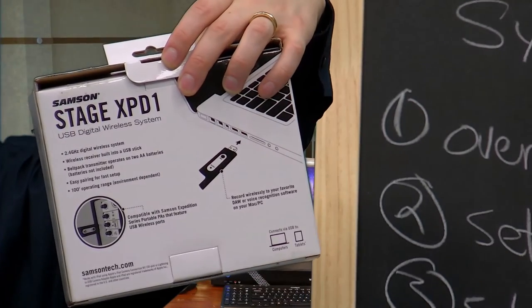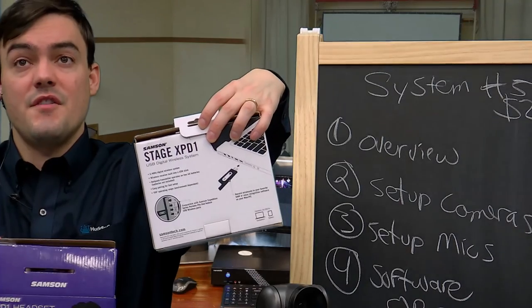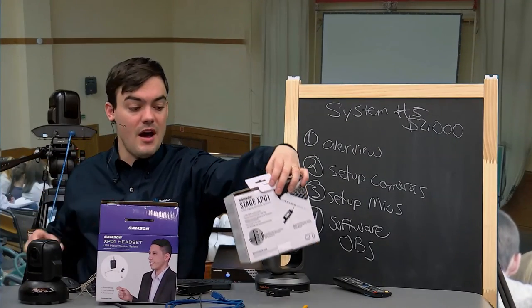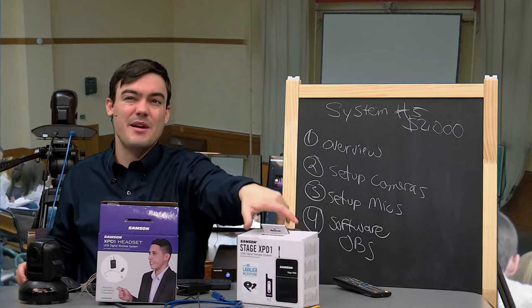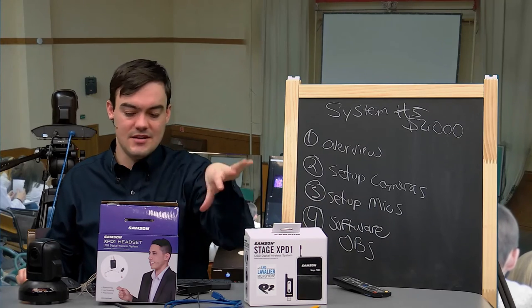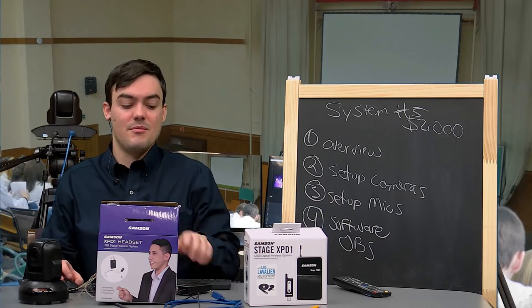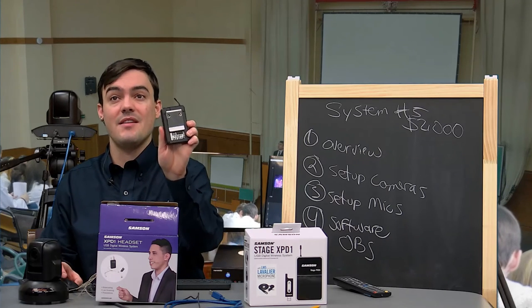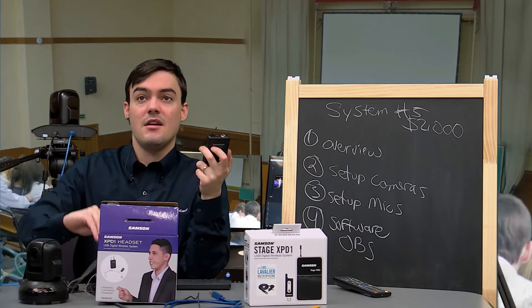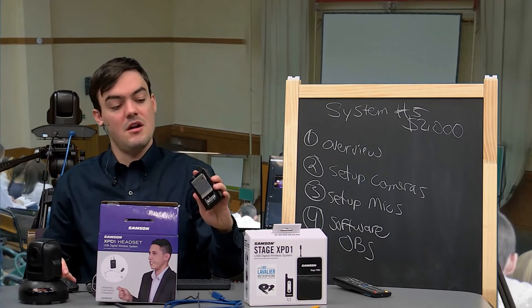It's a USB 2.0 plug that goes right into your computer. This goes up to 100 feet away from your space. So if you want to go about 100 feet away I would recommend 50, usually do half of what the manufacturer is claiming, indoors only. This does not work outdoors, I've tried it. And we plug it in USB 2.0 to the computer. It has a little belt pack. These are $99 from Samson. You can get a headset or a lapel. Plug it in. Give the speaker their headset or their lapel mic and put this on, turn it on and you're good to go.